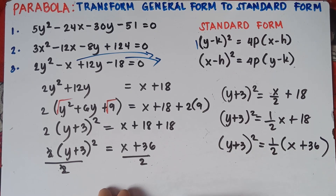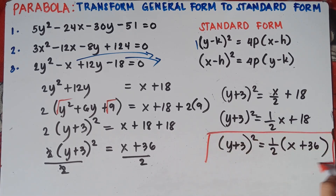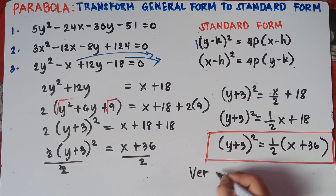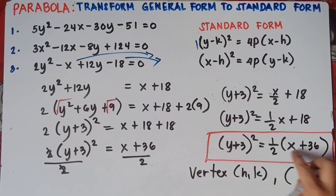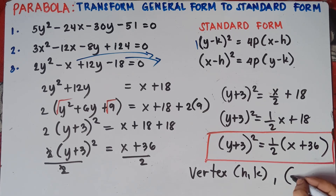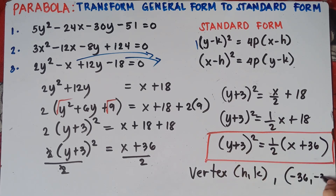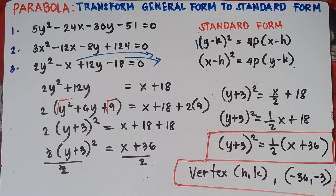That would be our final answer for number 3. Now for the vertex h and k: h is beside x — since we have positive 36 inside, your h will be negative 36. k is beside y — since we have positive 3, your k will be negative 3. That's it for number 3.